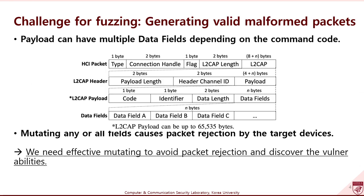Second, we need effective mutating. L2CAP packets can have various fields according to the command, which means they do not have a unified packet form. Previous Bluetooth fuzzers usually mutate any or all fields, causing packet rejection by the target devices. Therefore, we need effective mutating to avoid packet rejection and effectively discover vulnerabilities.